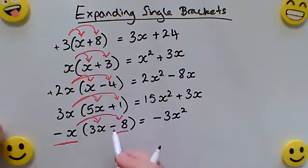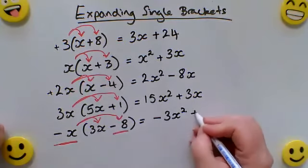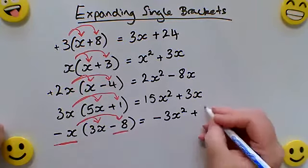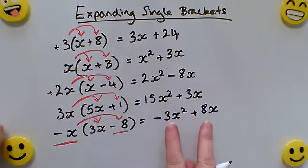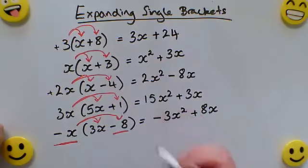And then negative x times, and now I've got another negative. If we remember, negative times a negative will give me a positive, so that would be positive 8x. And with each of these examples, it doesn't matter which way around you write your answer, as long as the sign in front of the term is correct.